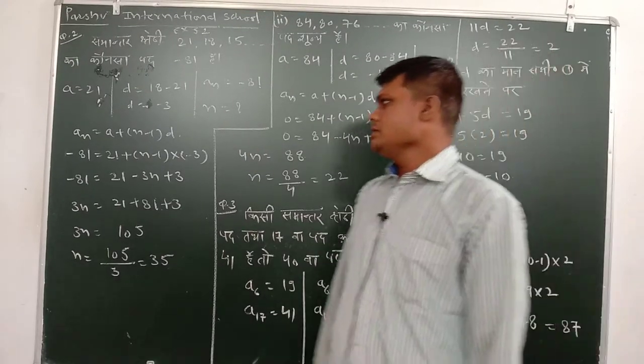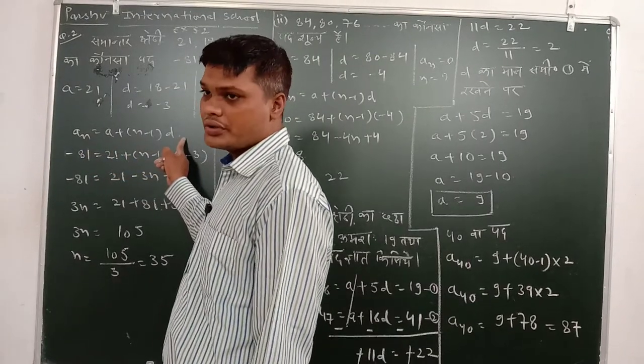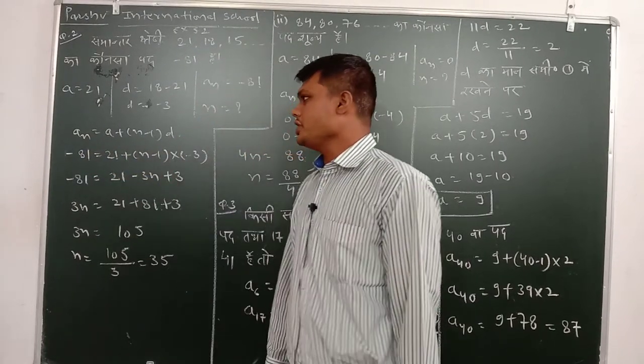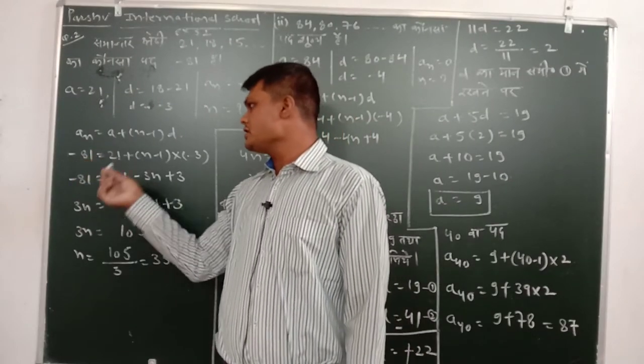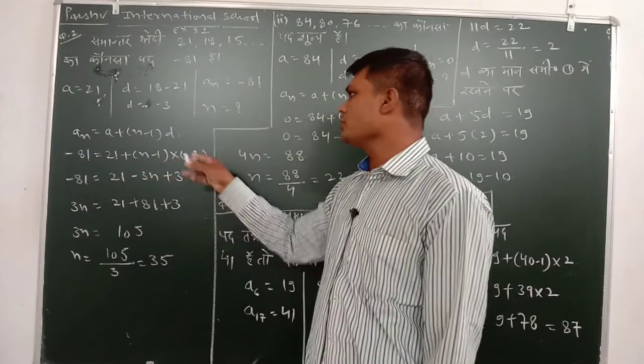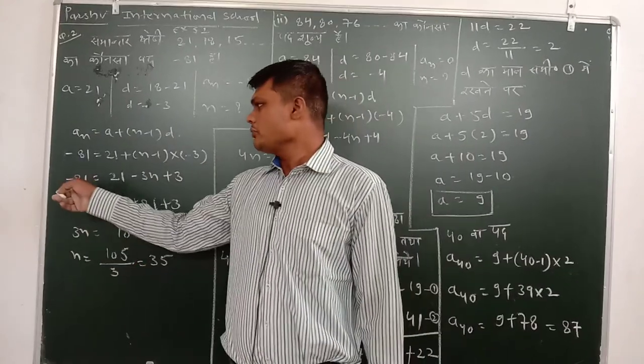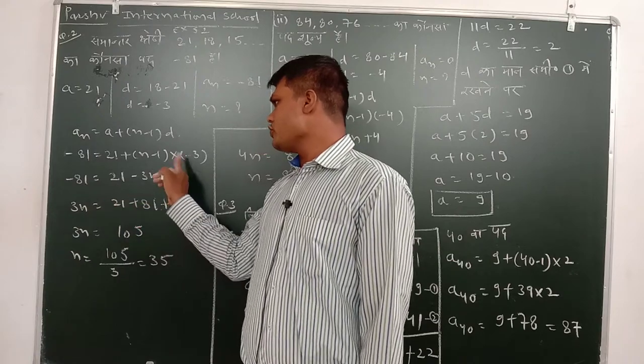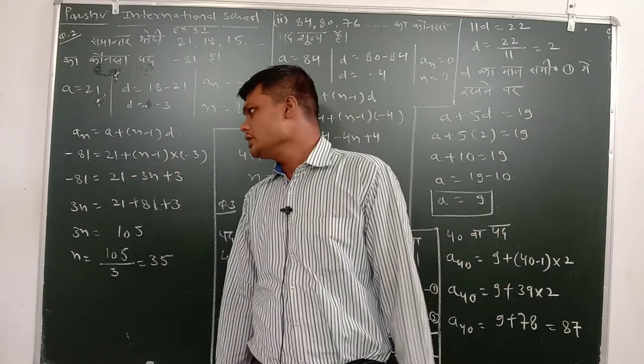Chuki hame jante hain, formula an barabar a plus n minus 1 into d. So an kaman kitna hoga ye? Minus 81 barabar a kaman 21 plus n minus 1 into d kaman hain rakh diya, yaha pare minus ka 3. So minus 81 barabar 21 plus isko multiply kiya to minus ka 3n and minus minus plus ka 3.